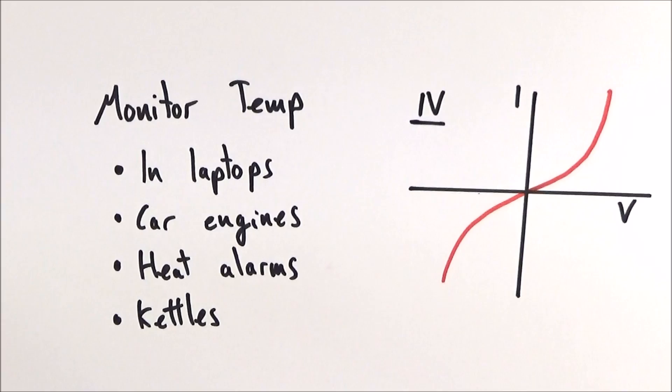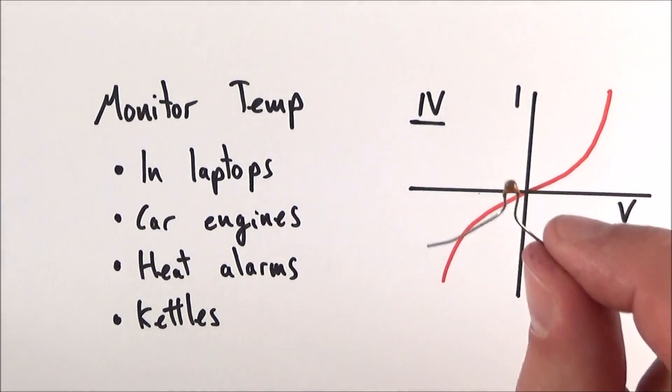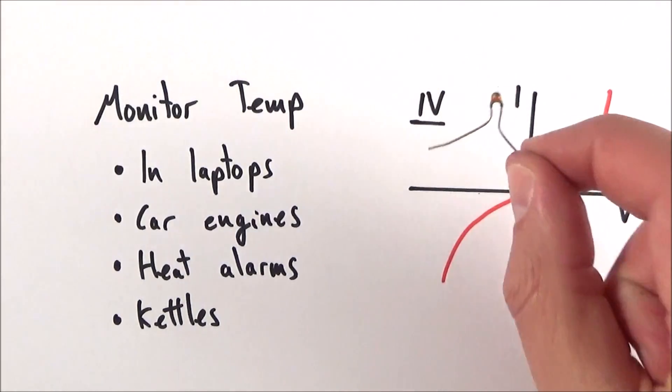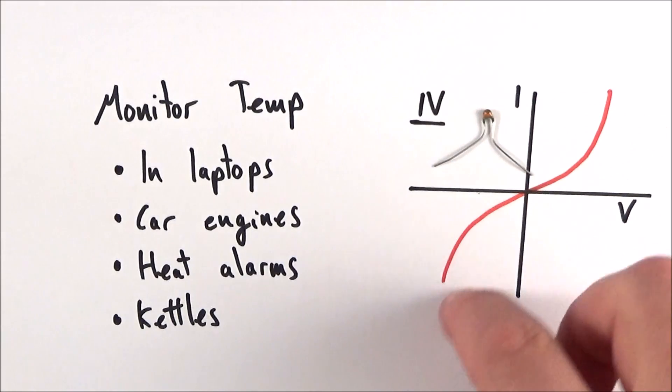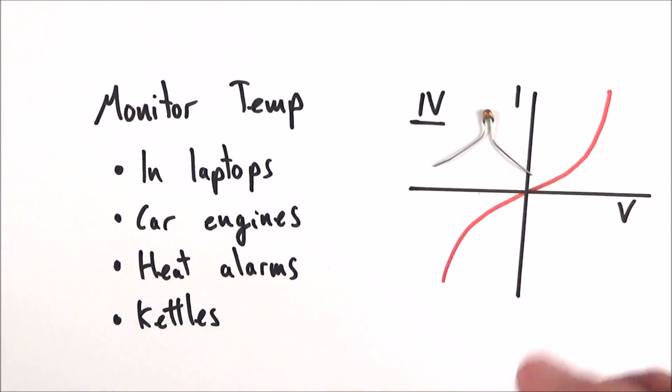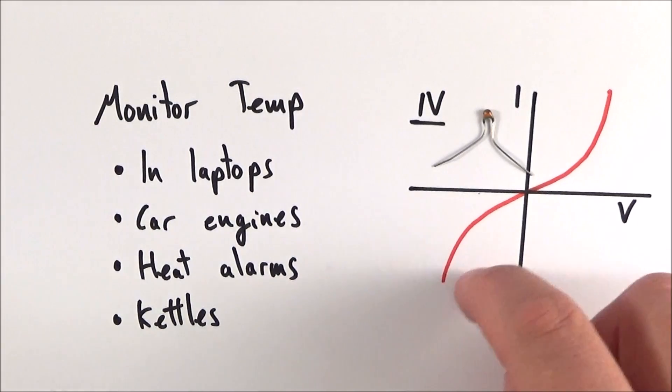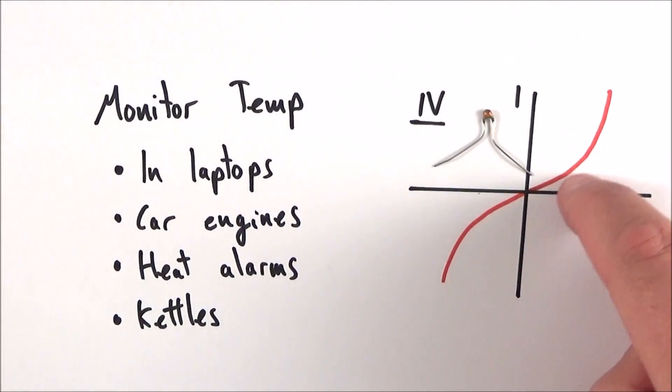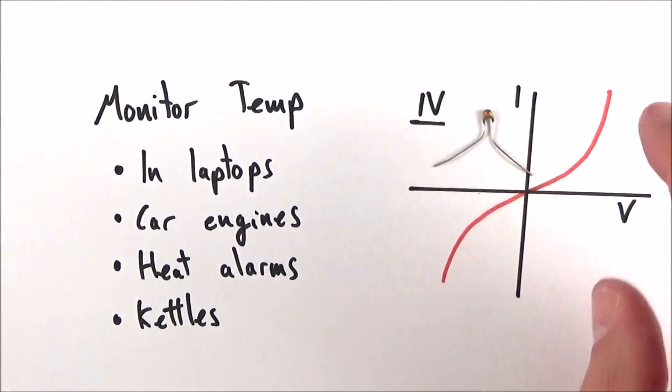The last thing to look at are the IV characteristics of this component. This is completely the other way around to a filament lamp. With a filament lamp, the resistance gets higher with higher temperature. Here, because the resistance gets lower at higher temperature, we see that the line tends to get higher and higher rather than shallower and shallower.